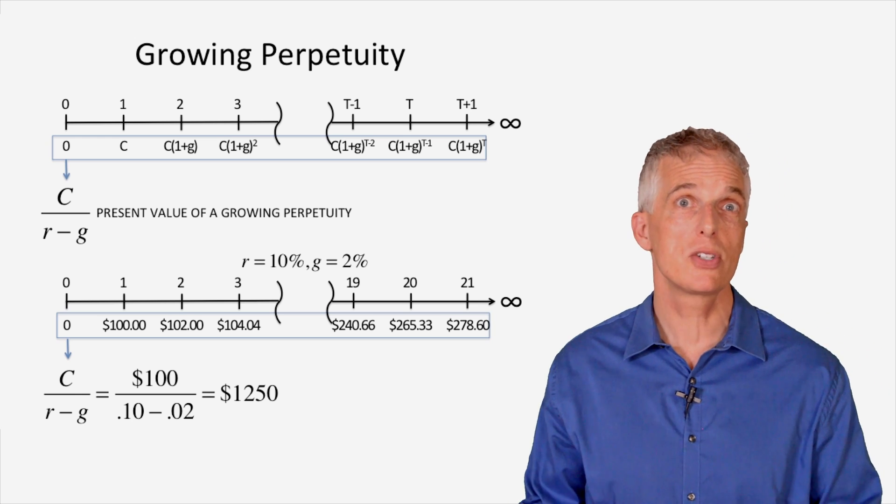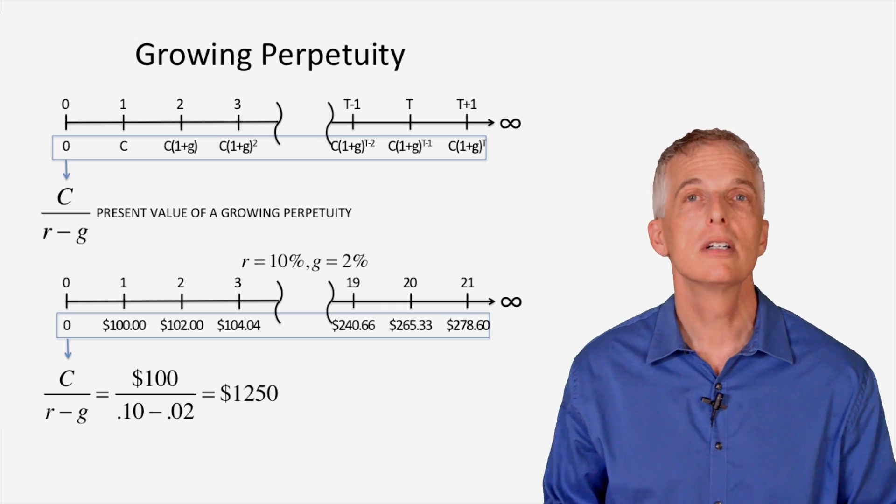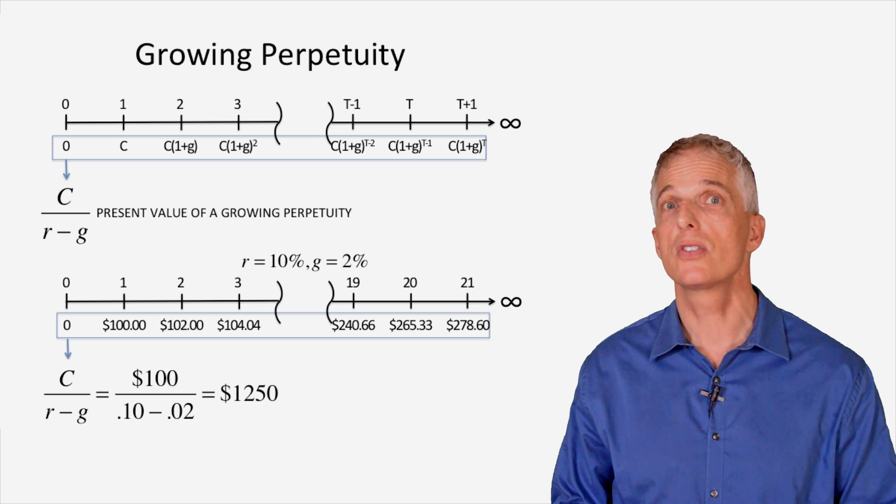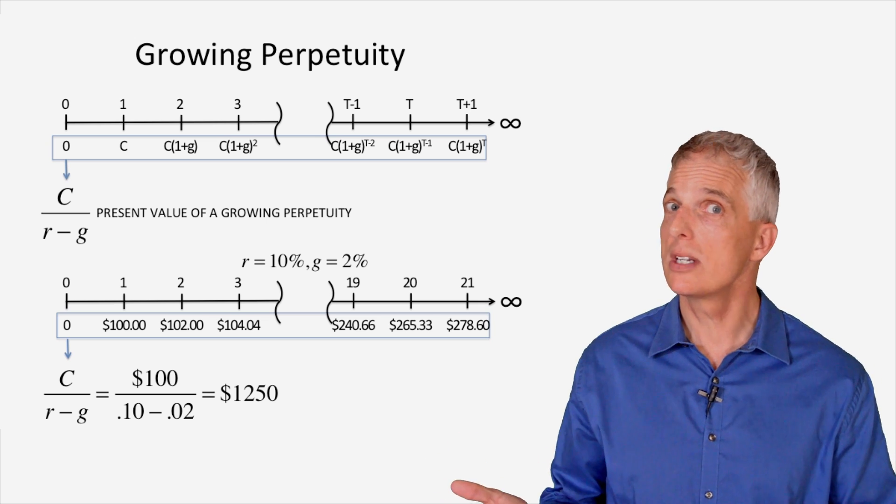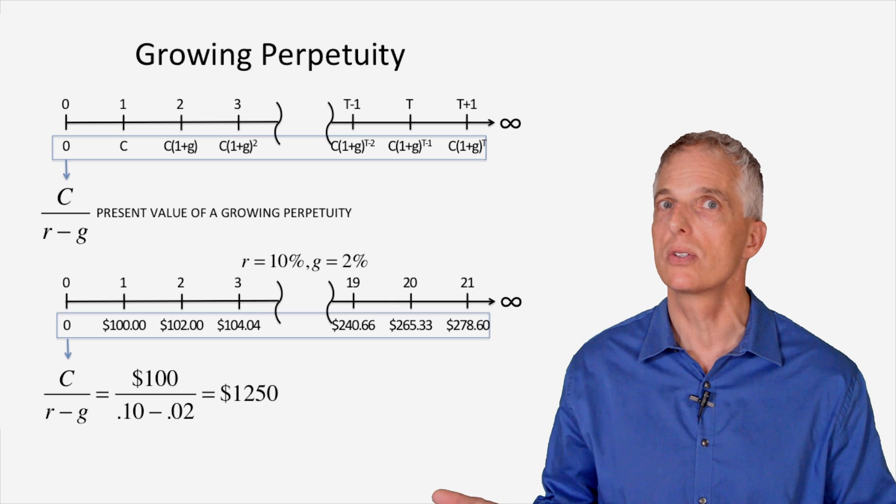Recall that the promise of $100 forever when interest rates are at 10% would cost us $1,000. Of course, it makes sense that we must pay more than $1,000 for this cash flow since our initial payments of $100 begins growing at 2% in year 2.